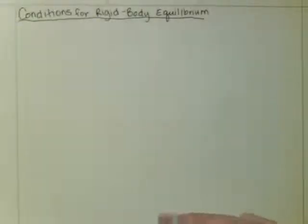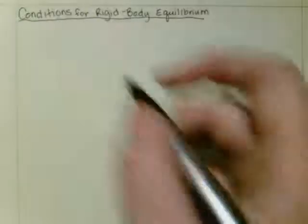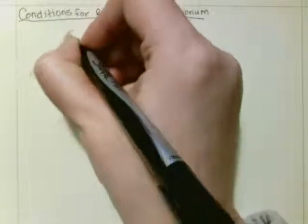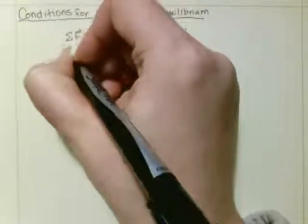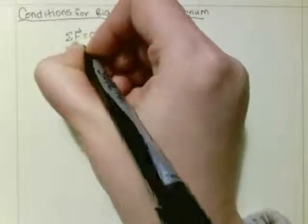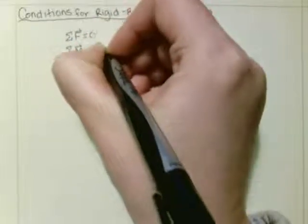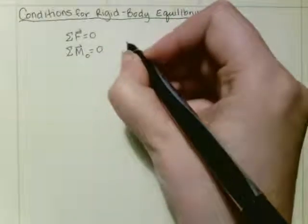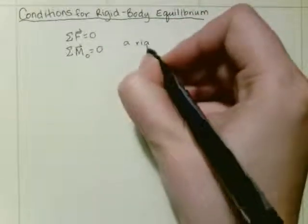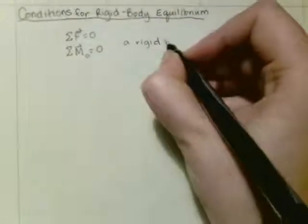Okay, so the conditions for rigid body equilibrium. That's going to be that the sum of the forces is equal to zero and the sum of the moments about point O is also equal to zero. And that can only happen because a rigid body will not deform.